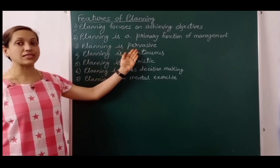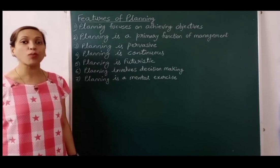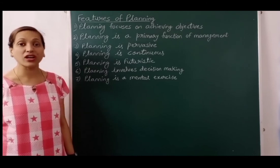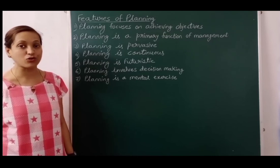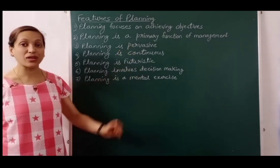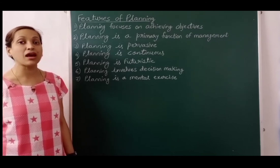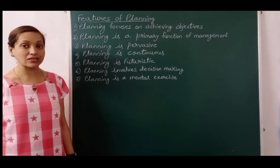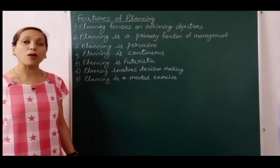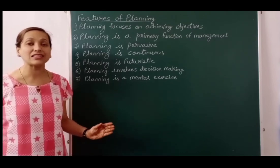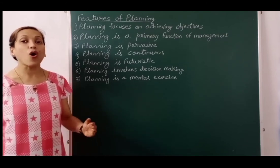The third feature is: planning is pervasive. Pervasive means omnipresent — which is present everywhere. Individuals, business organizations, families, government organizations, and non-government organizations — all have to do planning for their area. Planning is not only done by top management; middle level and lower level managers also plan for their respective departments. Top level managers plan strategy for the whole organization, middle level for their departments, and lower level does operational planning.